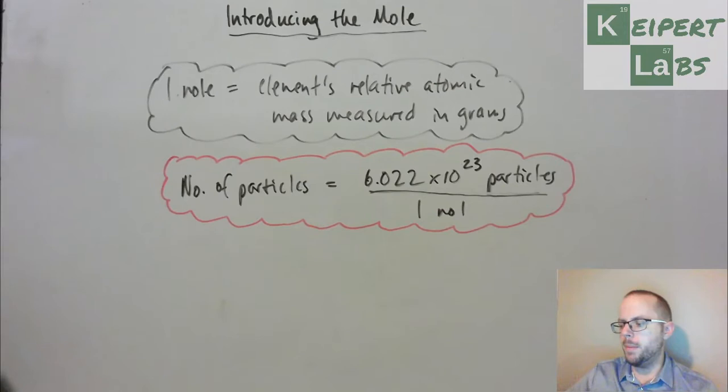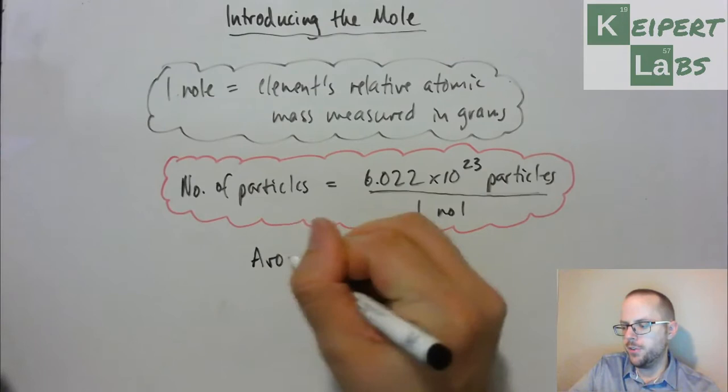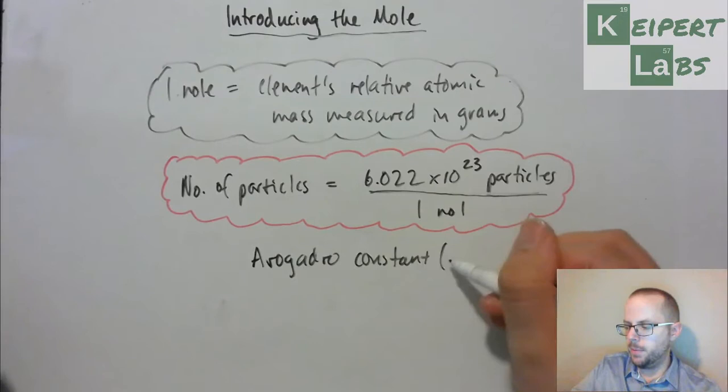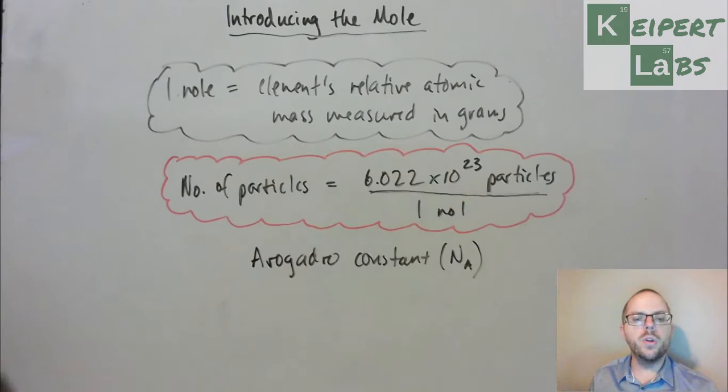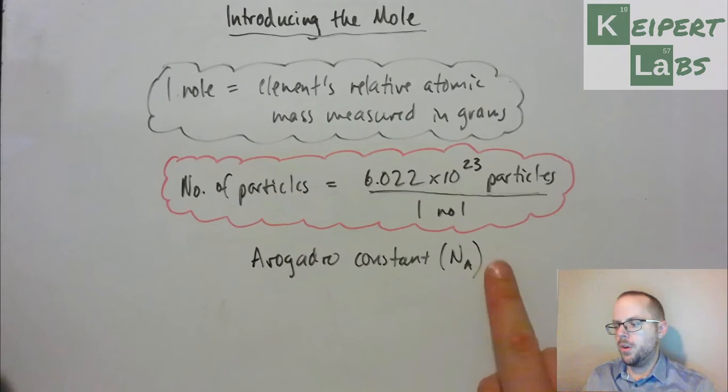Now, there are some more significant figures that could come after this. We know it a bit more accurately than that. But this idea being that that is an immensely large number of particles. But it is something that we know with confidence. Now, this is not a number that you need to memorize. It's known as the Avogadro constant or Avogadro's number. It's given this constant with the symbol of capital N with a lowercase A and so it represents this number. Now, you will always be provided with this number if you need to be able to use it. It will be on the data sheet that you'll be provided with.